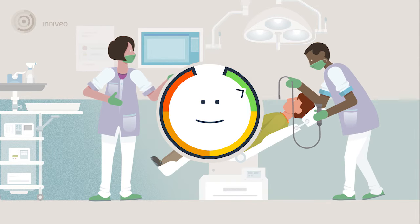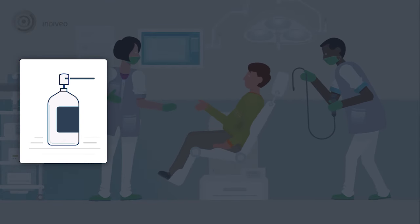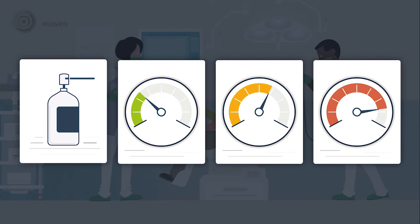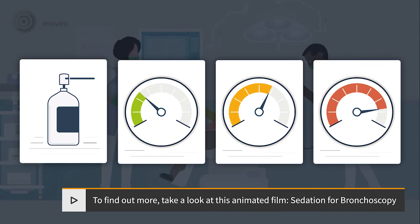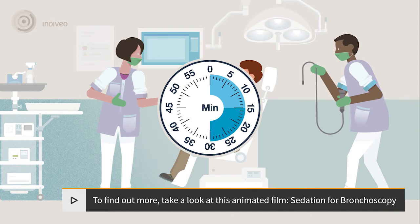To ensure that you are as relaxed and comfortable as possible during your bronchoscopy, you can choose from a variety of sleeping aids in addition to the throat sedation. To find out more, take a look at this animated film: Sedation for Bronchoscopy. The procedure lasts approximately between 15 and 30 minutes.